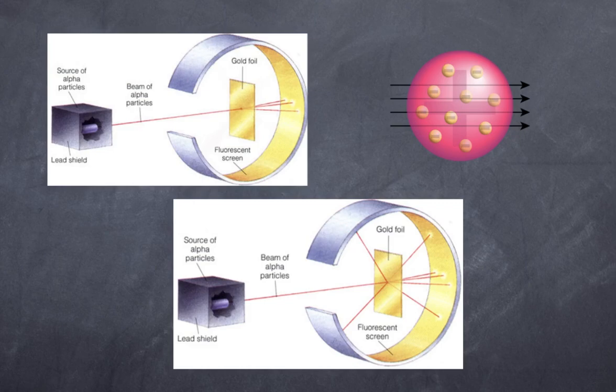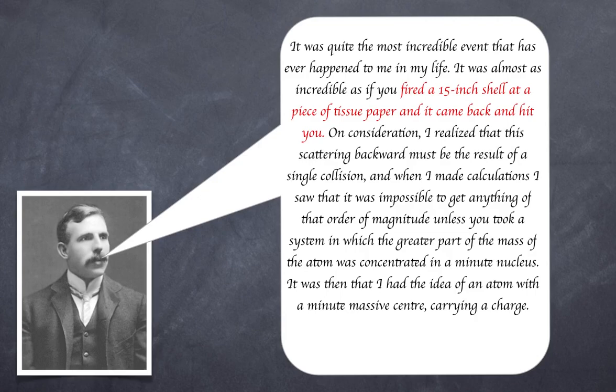His quote is: 'It was quite the most incredible event that has ever happened to me in my life. It was almost as incredible as if you fired a 15-inch shell at a piece of tissue paper and it came back and hit you. On consideration, I realized that the scattering backward must be the result of a single collision. When I made calculations, I saw that it was impossible to get anything of that order of magnitude unless you took a system in which the greater part of the mass of the atom was concentrated in a minute nucleus. It was then I had the idea of an atom with a minute massive center carrying a charge.' So let's unpack what he basically came up with.